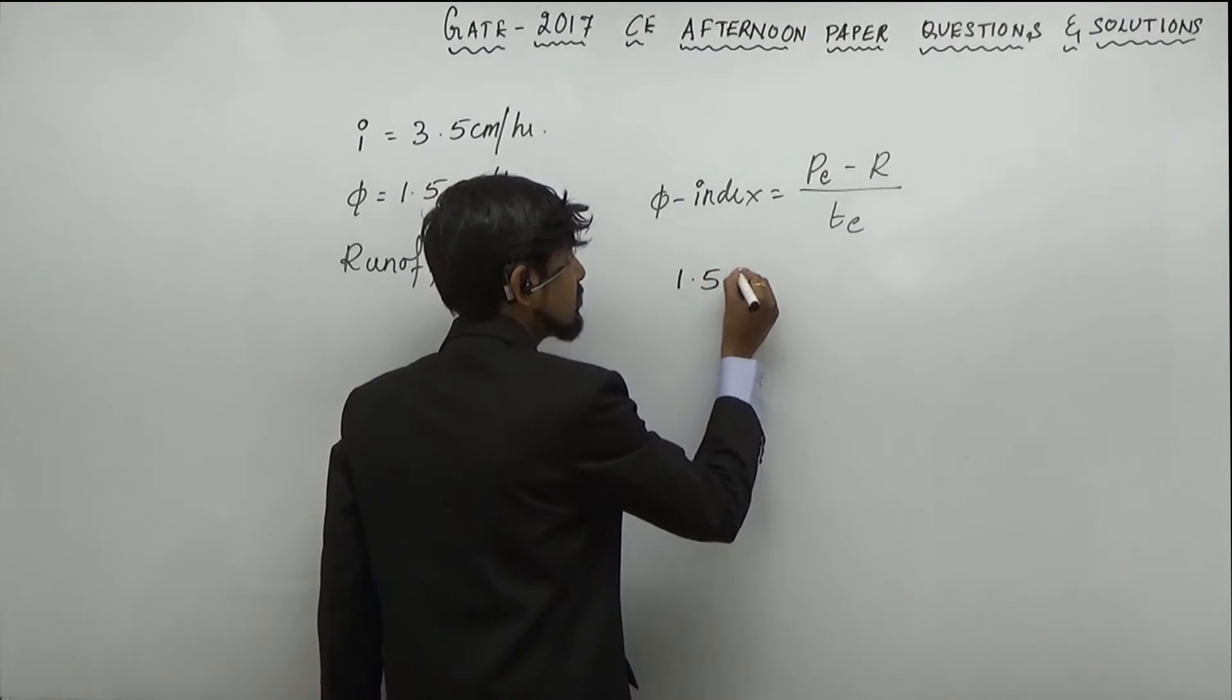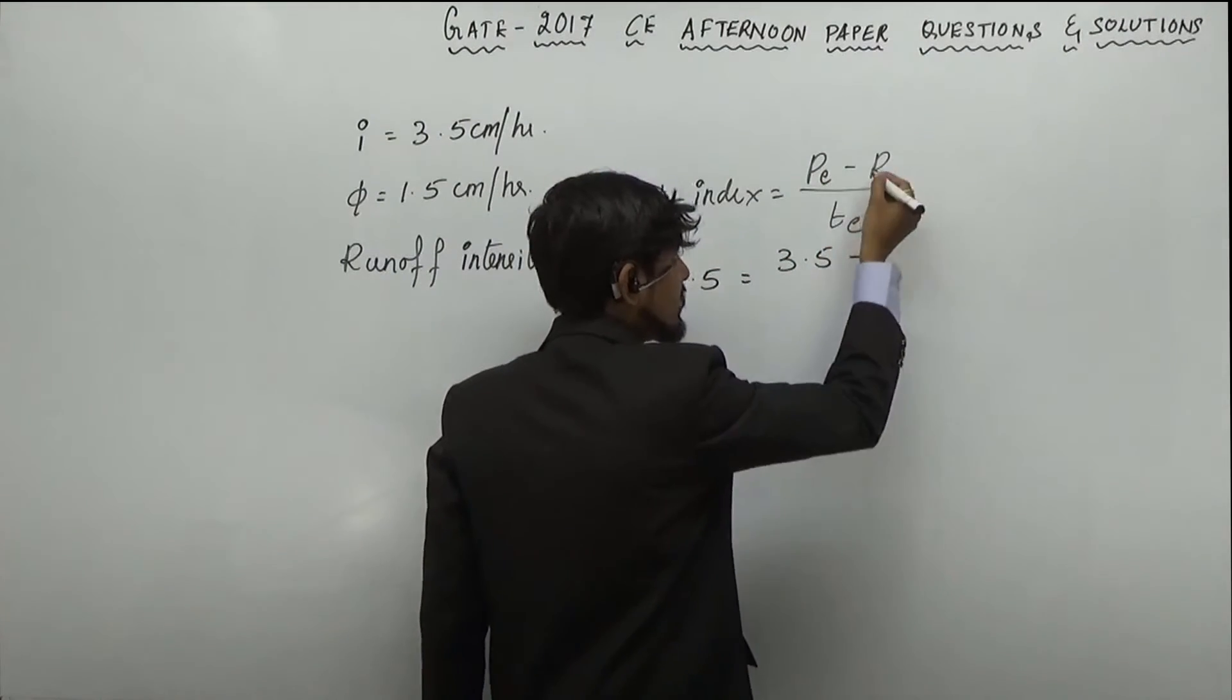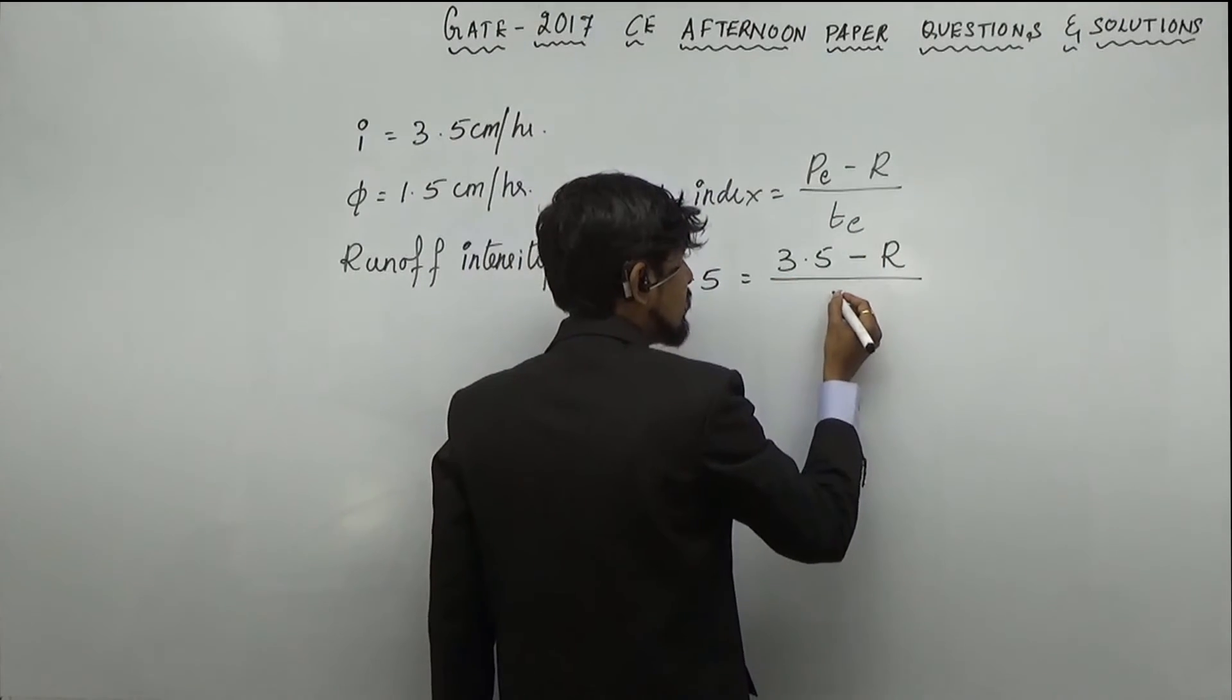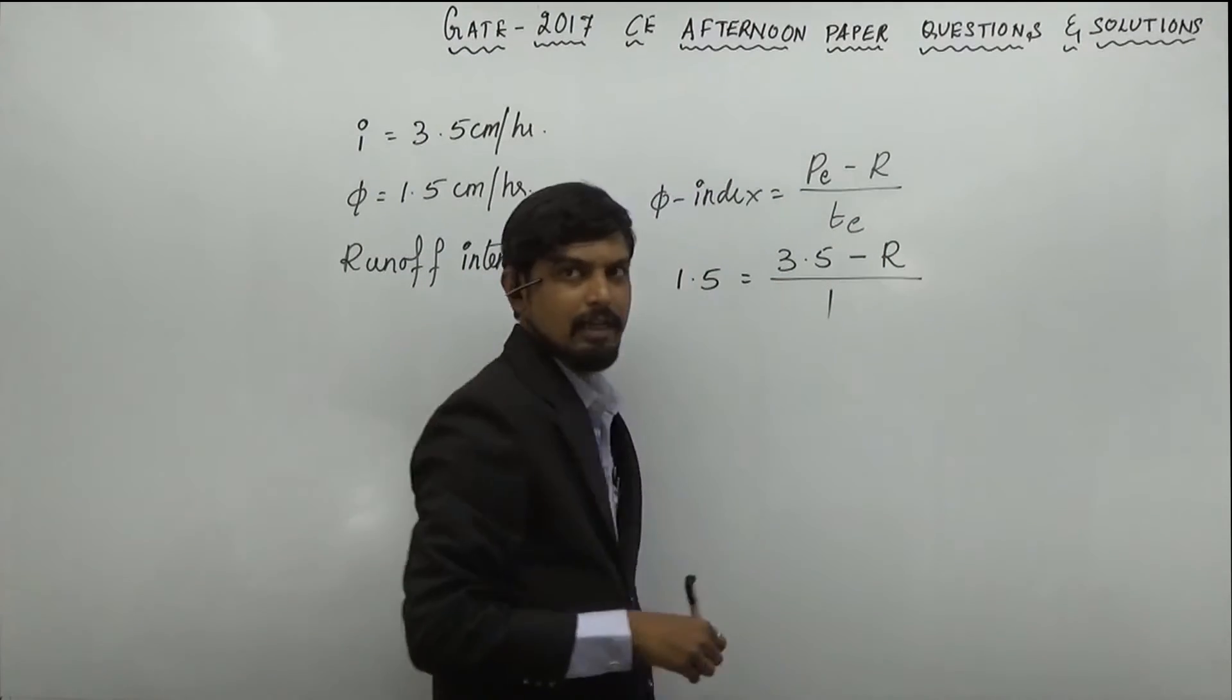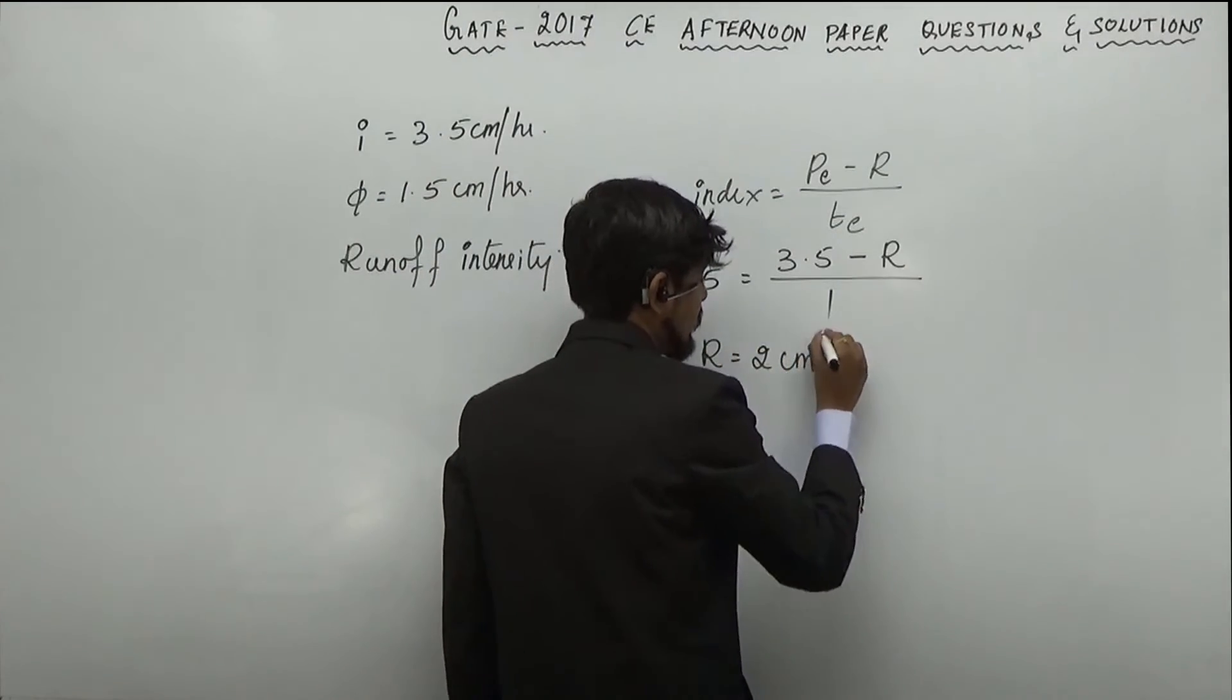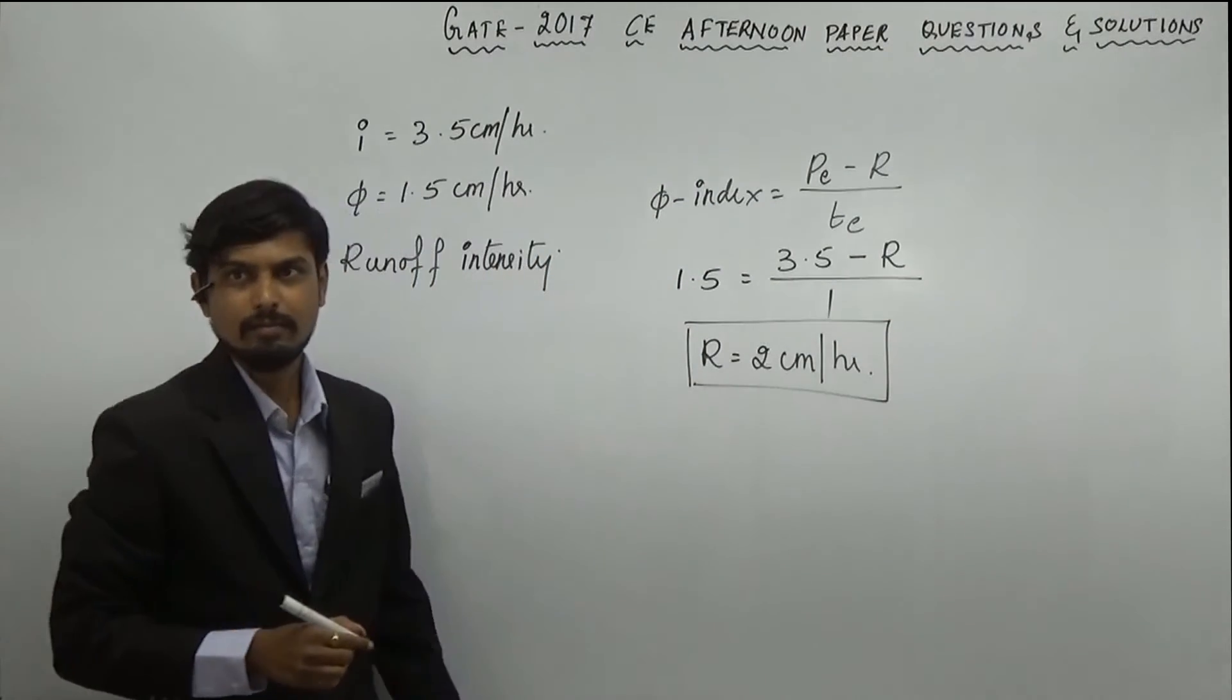Phi index is 1.5, te I will take directly as i 3.5, minus r, whole divided by te. Time te is 1. I will take 1 directly. So if you solve this, r you are going to get it as 2 cm per hour.